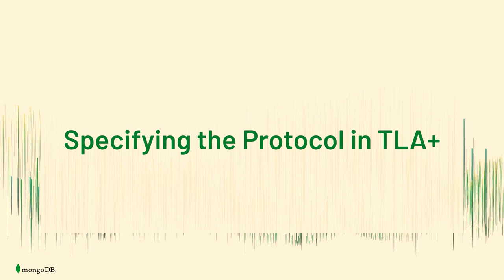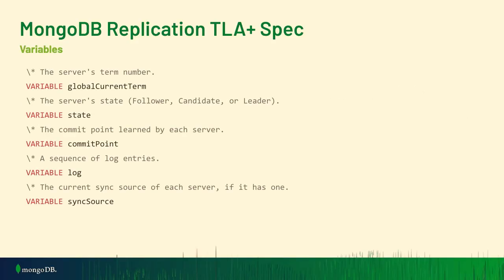Hopefully that overview of bugs gives you motivation for why we wanted to start using TLA+. Here's an overview of the key aspects of the spec we wrote. The variables in the spec are: globalCurrentTerm — the term of the current leader; state — a per-server variable representing the current state of that node; commitPoint — the local commit point on each server; log — the node's log; and syncSource — a node's current sync source, if it has one.